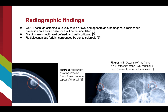Radiography of osteomas usually shows a round or oval bone tissue mass on CT scan. It appears as a homogeneous radiopaque projection that can be either sessile or pedunculated, with noticeably smooth, well-defined margins containing a radiolucent nidus surrounded by dense sclerosis. In Figure 3, a radiolucent nidus can be seen in the middle of an inner skull osteoma, and in Figures 4 and 5, a radiopaque osteoma of the frontal sinus is shown with round, smooth margins.